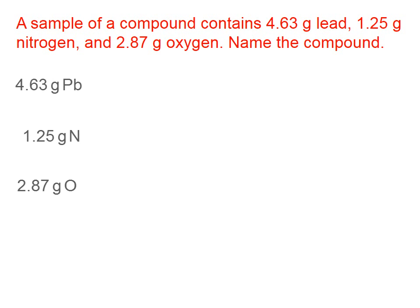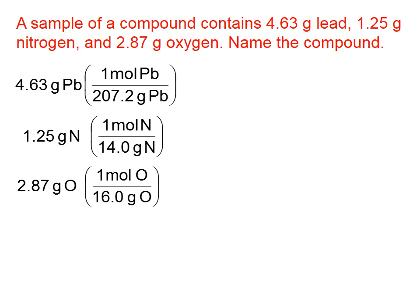Step 1 says that we need to get grams of each element. That's pretty easily done here because those grams are given in the problem. The next step is convert each of those grams into moles. So, we're going to look up the molar mass of each of these three elements on the periodic table and calculate the number of moles.